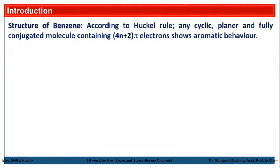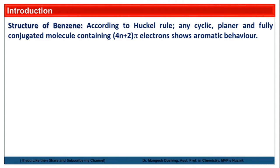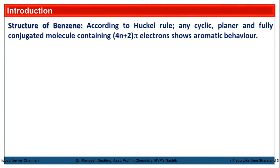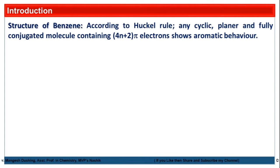Before going into the details, we should know what aromatic compounds are. According to the Hückel rule, any cyclic, planar, and fully conjugated molecule that contains 4n+2 pi electrons shows aromatic behaviour, and this aromatic character gives more stability to the aromatic compounds.